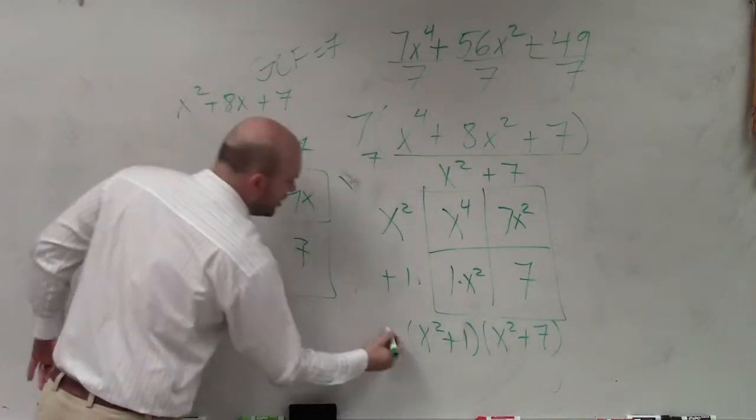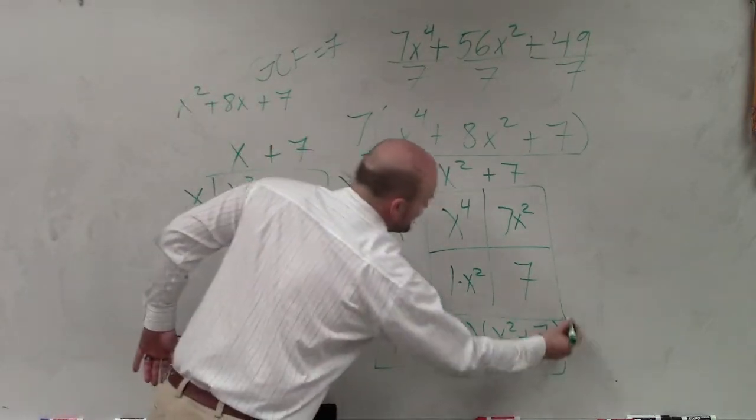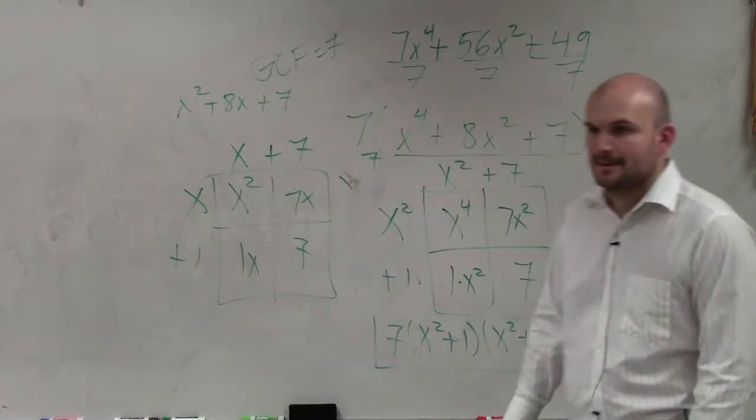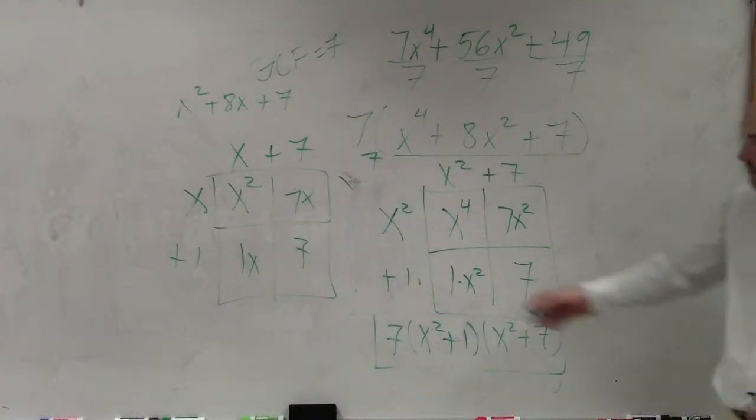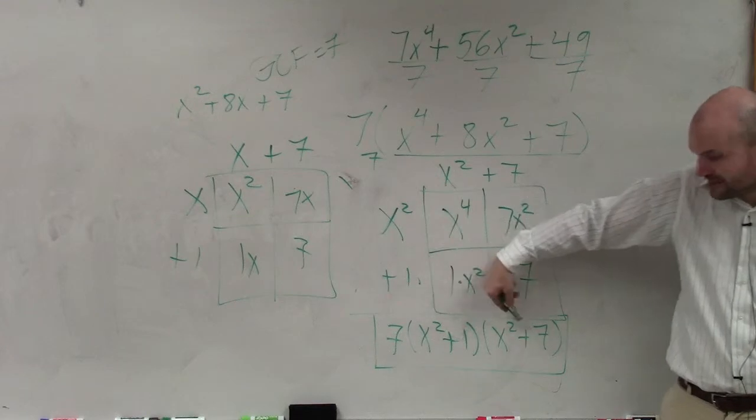And then still, multiplied by 7, that is your factored form. So what I want you to say, when you guys did it this way, it would be x plus 1, x plus 7.